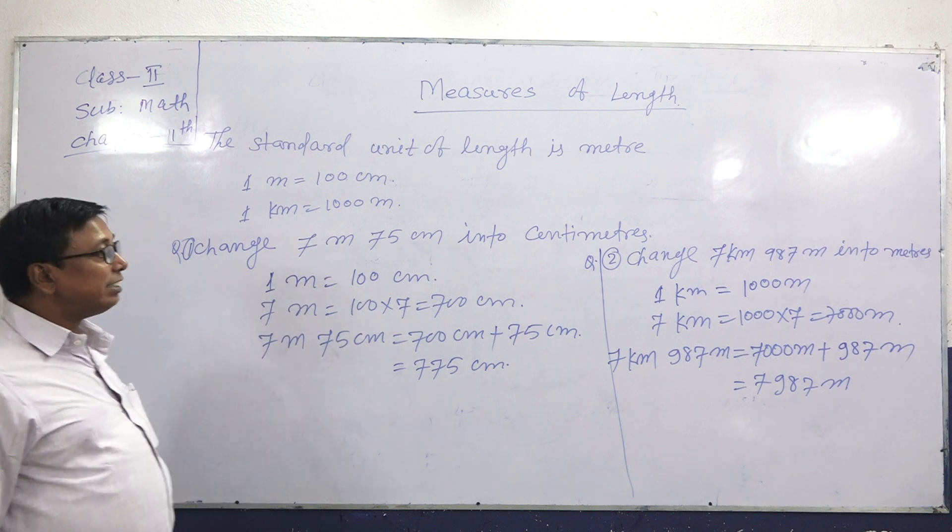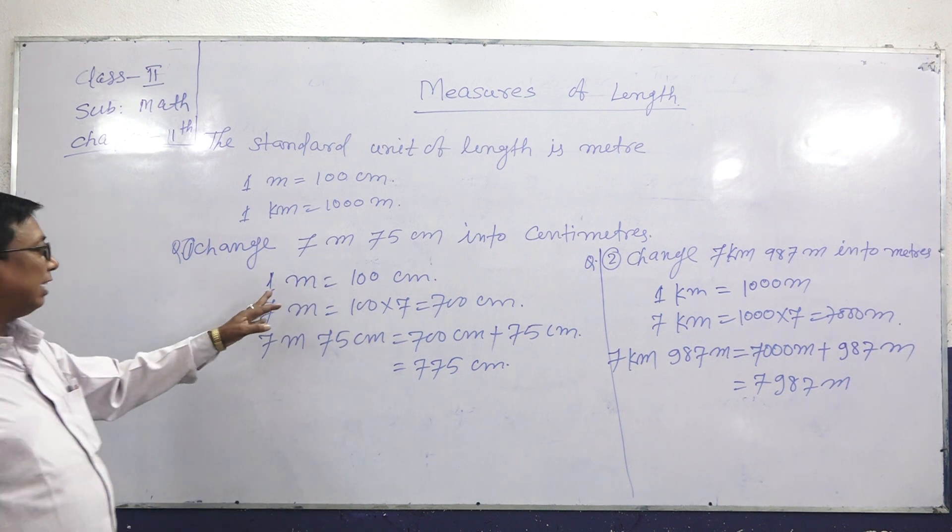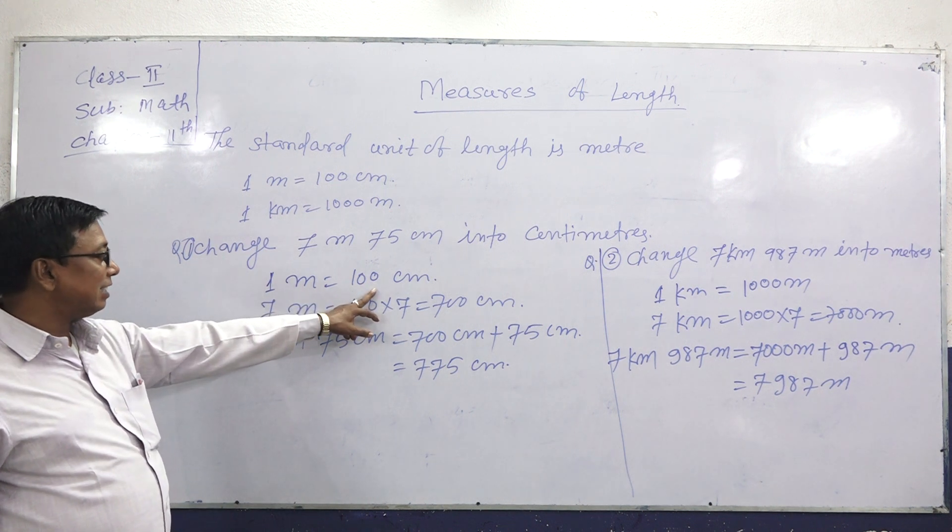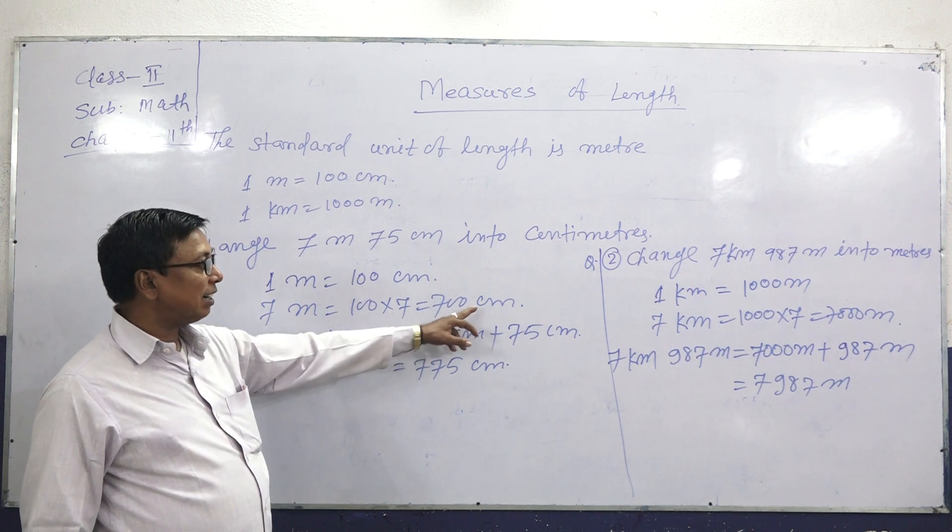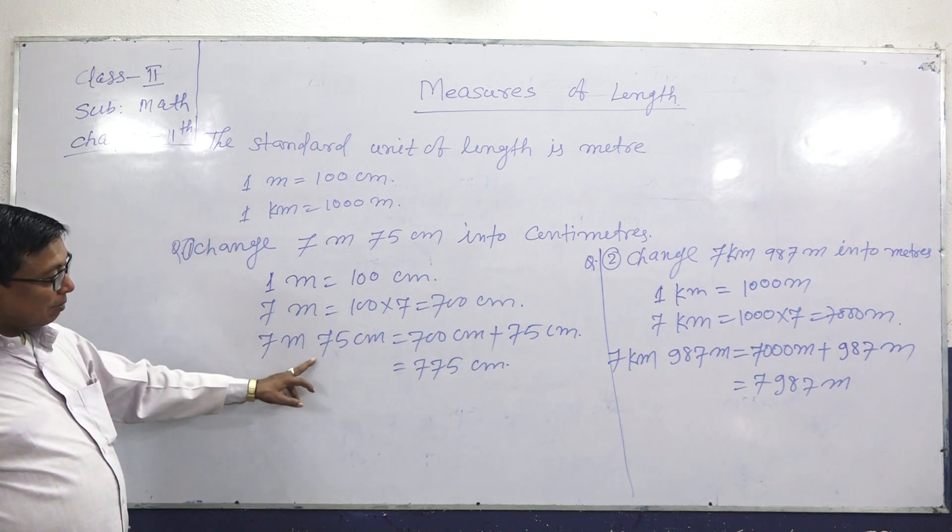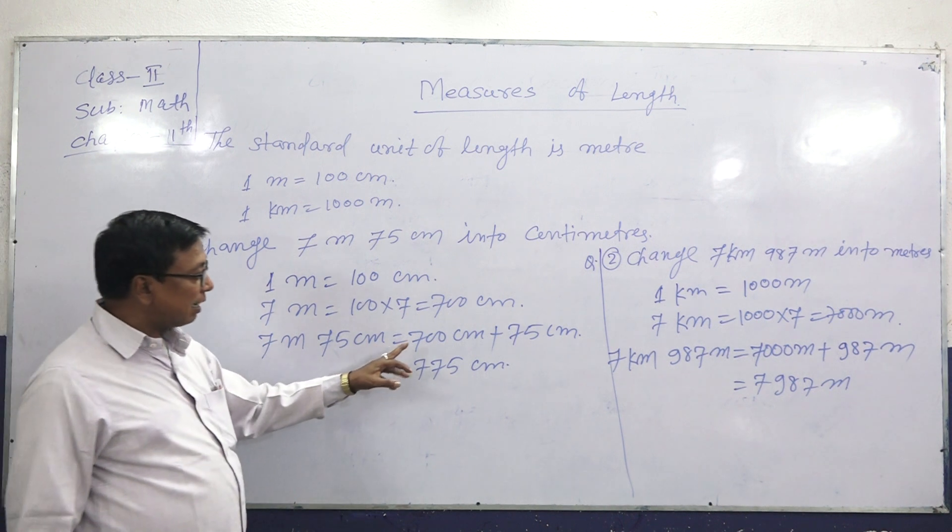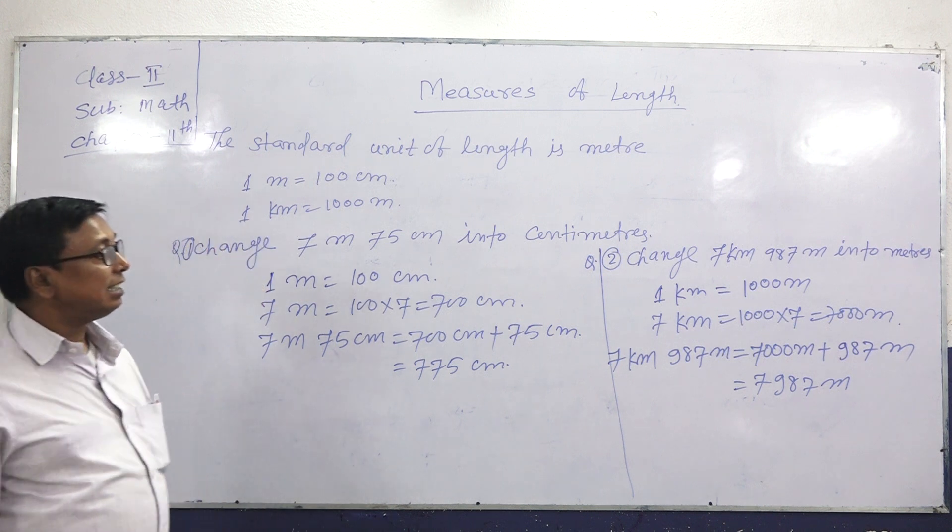7 meters, 75 cm into meters. We know that 1 meter equals 100 cm. So 7 meters equals 700 cm, and 7 meters 75 cm equals 700 cm plus 75, which equals 775 cm.